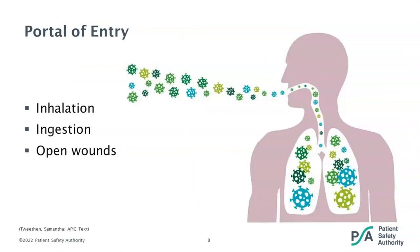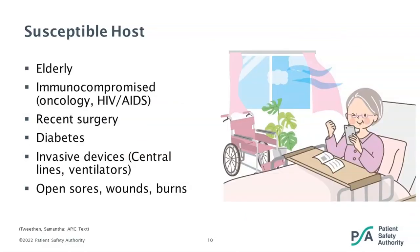Our next link in the chain is the portal of entry — this is how the infectious agent enters the susceptible host. During construction and renovation, the primary portal of entry concerns are inhalation, ingestion, and open wounds. The final link in the chain of infection is the susceptible host. Any person can be a host for an infectious agent, but there are certain groups that are more susceptible. In long-term care facilities, common groups that are more susceptible are the elderly, the immunocompromised, residents who've had recent surgery, diabetics, any person with an invasive device, and anyone with open sores, wounds, or burns.